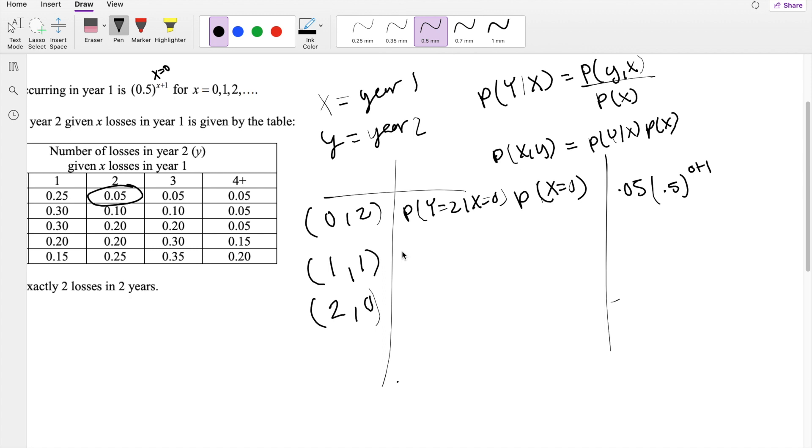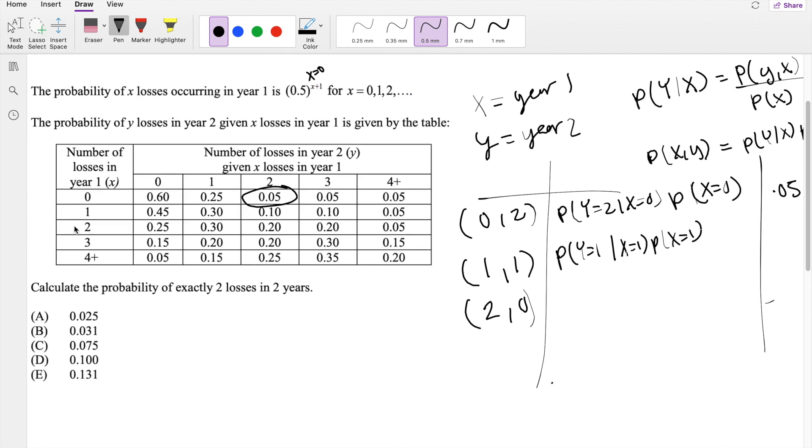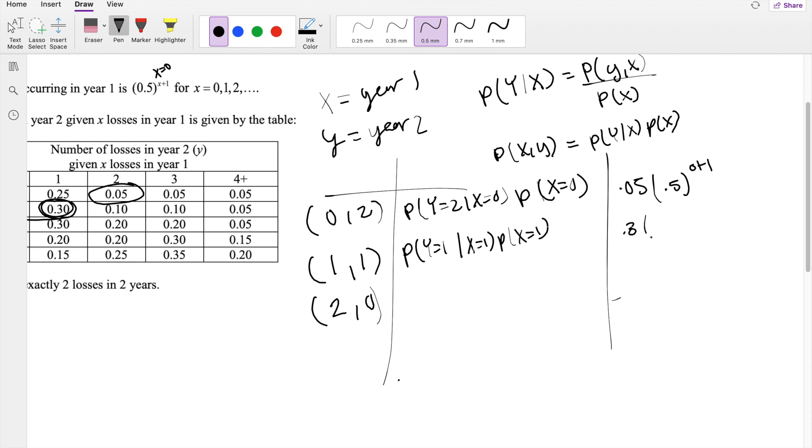The second one is the probability of Y equals 1 given X equals 1 times the probability that X equals 1. So given X equals 1, this row, the probability that Y equals 1 given X equals 1 is this number right here, 0.3. So that's 0.3 times 0.5, plugging 1 in here, so that's 1 plus 1.